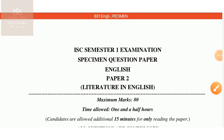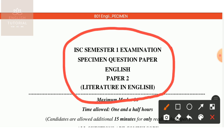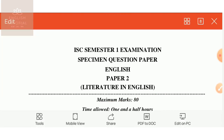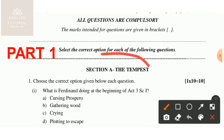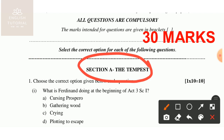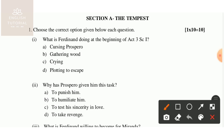Hello students, today in this video I am going to give you the answers to your ISS semester 1 specimen question paper — English Paper 2, that is Literature in English. I have decided to answer the specimen question paper in three parts. Today is Part 1, where you'll be having the answers for Section A: The Tempest. The council has assigned 30 marks for Section A.